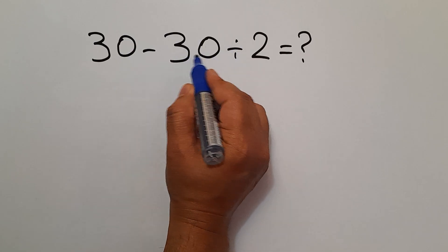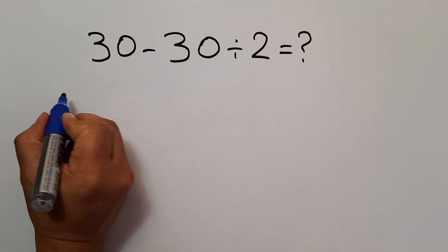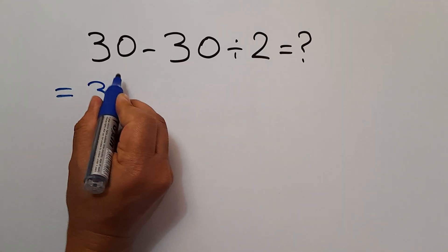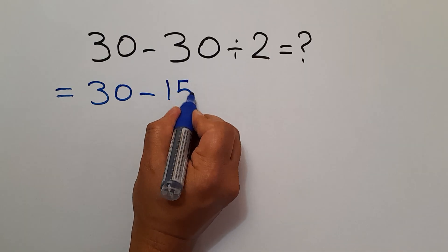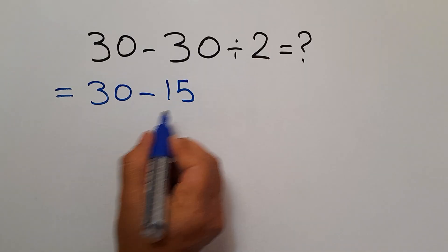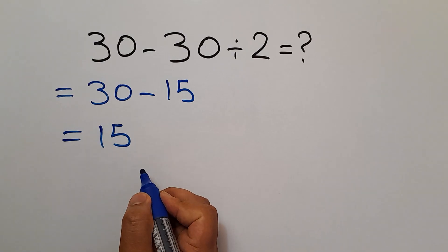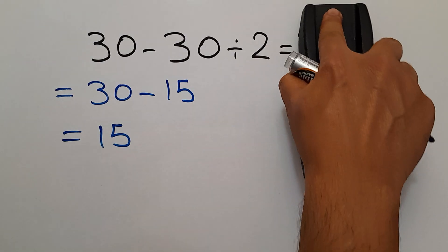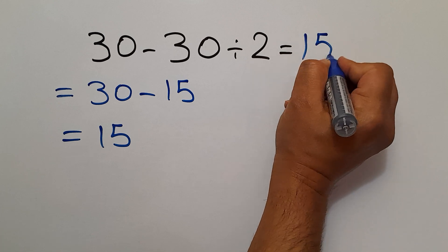30 divided by 2 gives us 15, so we have 30 minus just 15, and 30 minus 15 equals 15. Therefore our final answer to this problem is just 15.